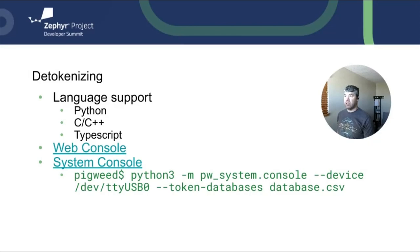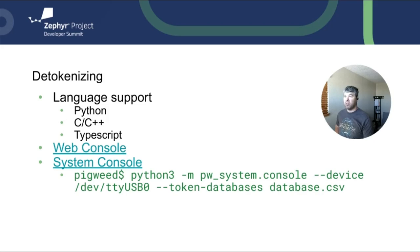Now that we understand what's in Pigweed's token database and how to create one, let's use it to detokenize our strings. Pigweed's detokenizer API is currently supported in three languages: Python, C, C++, and TypeScript. There are examples available for you to connect your board to view tokenized logging output. One is their web console, which lets you flash your device, open a web browser, and see your logging displayed in it. Pigweed also has a terminal-based system console tool written in Python to view your tokenized logs, as well as examples in C++ in the documentation online.